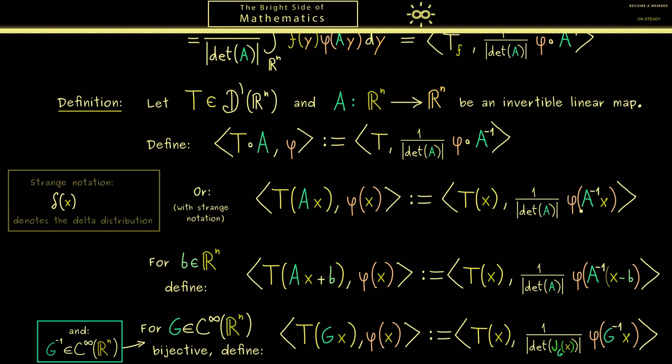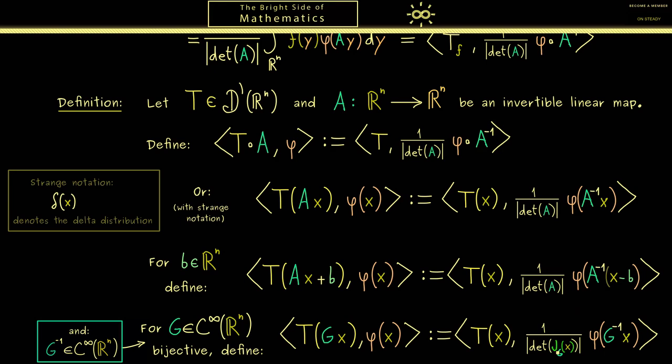Of course, besides this, it looks exactly the same as before, now with g inverse. However, here please note the Jacobian matrix can depend on x. Therefore, also here this sloppy notation is helpful again.